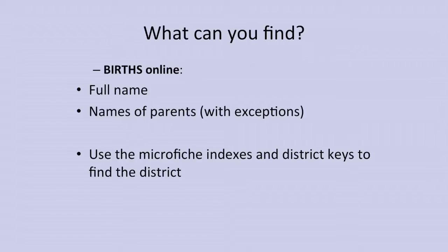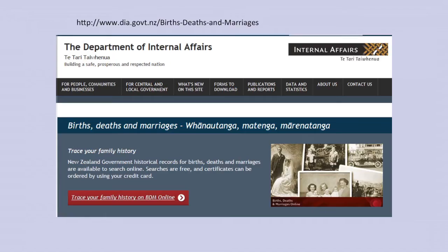So what can you find from these? For births online you can find the full name, the names of the parents, although there are some exceptions. And if you use the microfiche indexes and the district keys, which have been produced by the New Zealand Society of Genealogists, you may be able to find the district. This first slide shows us the Department of Internal Affairs which hosts the Births, Deaths and Marriages online indexes.